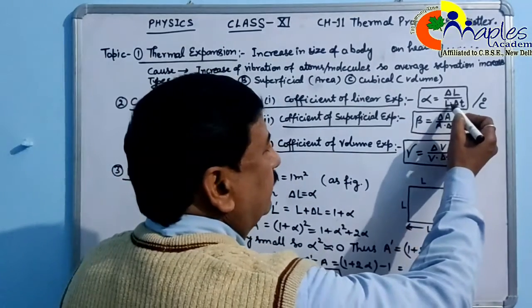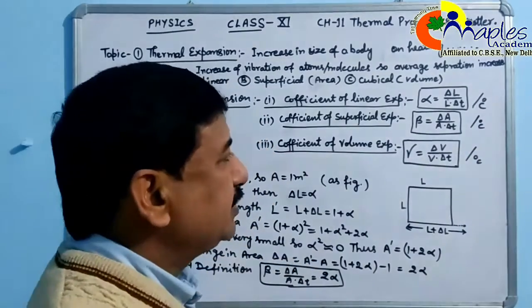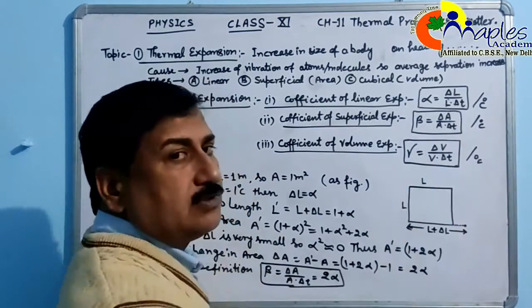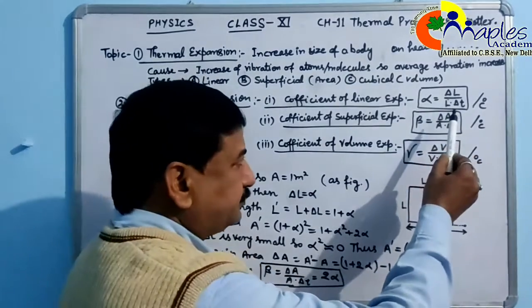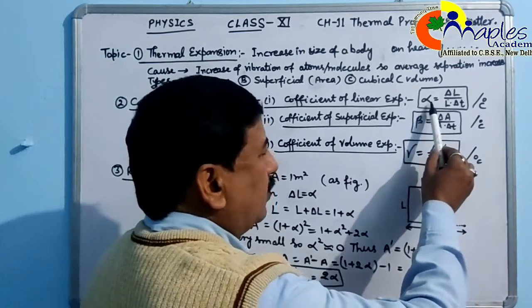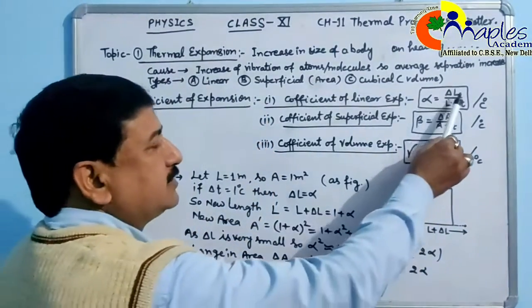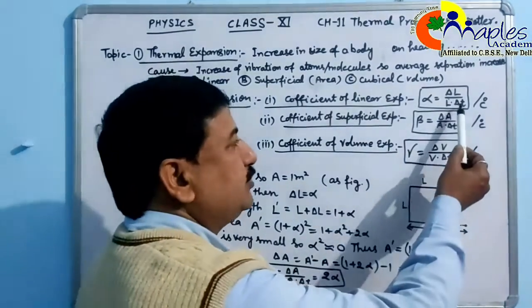Suppose we have a wire with original length L. When the temperature is increased by delta T, the length increases by delta L. Delta L depends on L and delta T directly. The coefficient is alpha. So alpha equals delta L (change in length) divided by original length times change in temperature: alpha = ΔL / (L × ΔT).